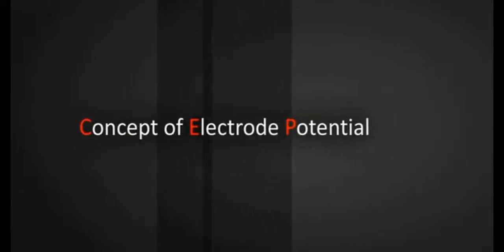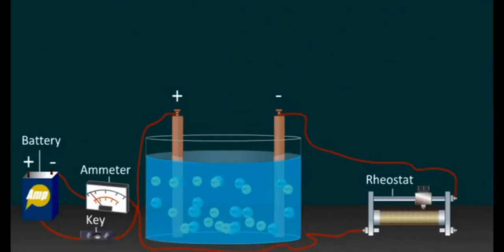of electrode potential. When an electrode, say copper, is immersed in contact with the solution of its ions, then either of the following three possibilities can take place.